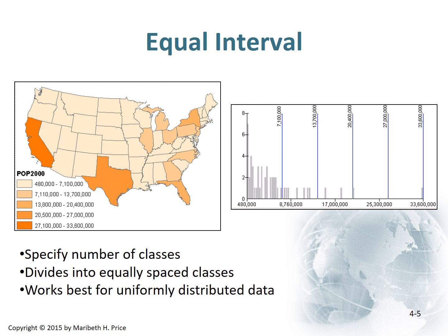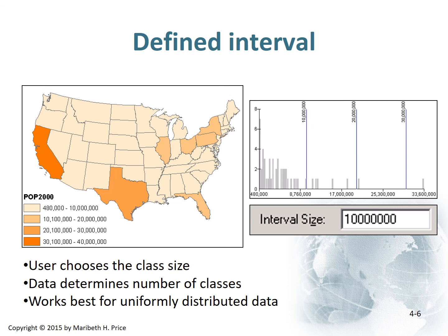Equal interval has a defined spacing. For example, if you've got five classes, it divides all your data up into five equal classes. When you look at equal interval, just think equal size classes. It works best for uniformly distributed data. Defined interval is when you pick a class size, like a thousand, and then you end up with however many classes that lends to. It also works best for uniformly distributed data.